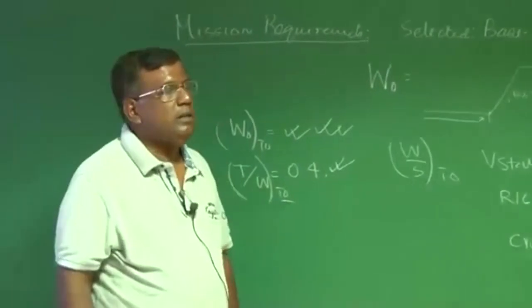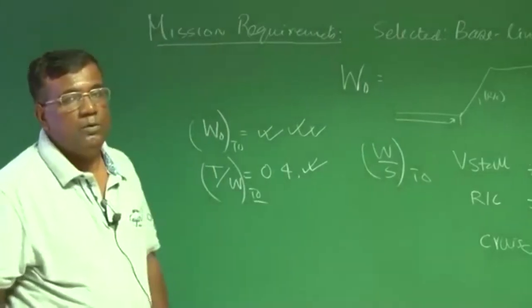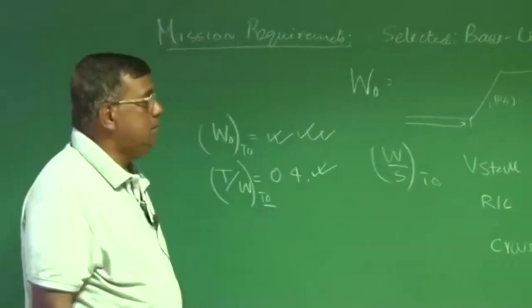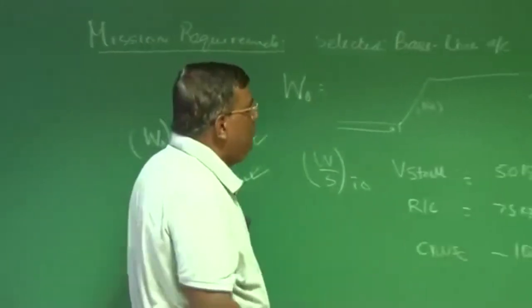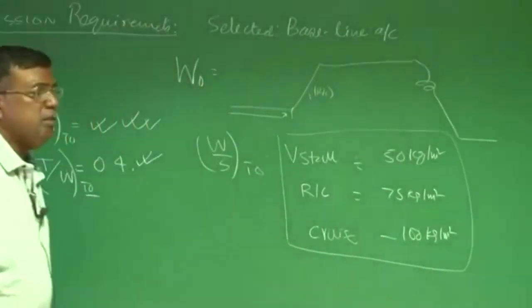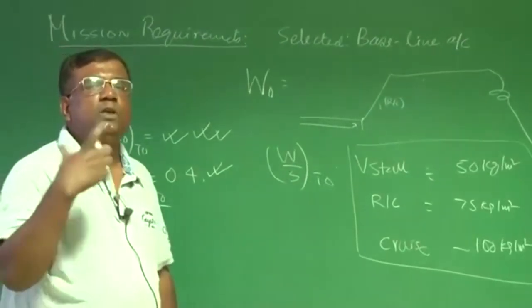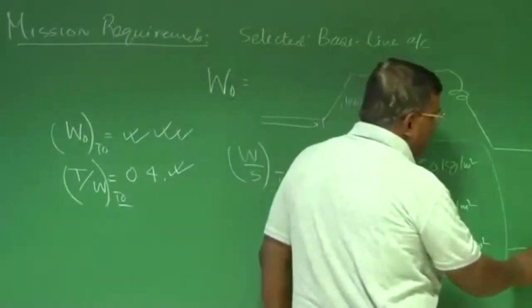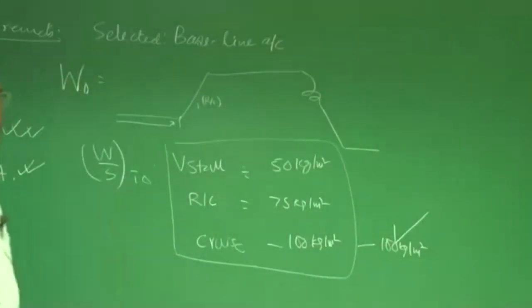What we look for is: when I am designing the airplane, what is this airplane supposed to do for the maximum time? If it is a transport airplane, we give more weightage to the cruise range. And from that, if I get a cruise value of around 100 kg/m², then I am tempted to pick that value of 100 kg/m².